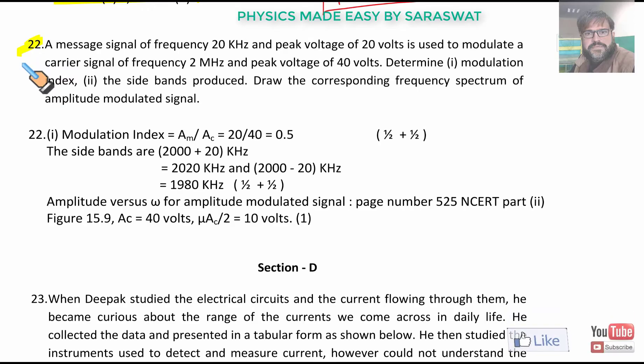Question number 22. Message signal of frequency ωₘ and peak voltage 20 volts is used to modulate a carrier frequency ωc of peak voltage 40 volts. Determine the modulation index: μ = aₘ/Ac = 20/40 = 0.5. The side bands produced are ωc + ωₘ and ωc - ωₘ, that is 2020 and 1980 kilohertz. Draw the corresponding frequency spectrum of amplitude modulated signal. Amplitude modulated signal is on page 525 NCERT part 2.